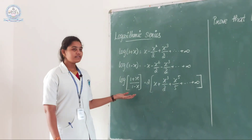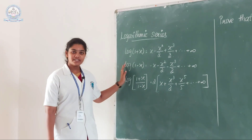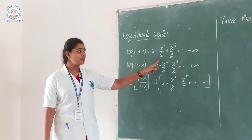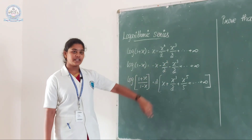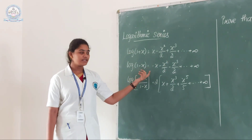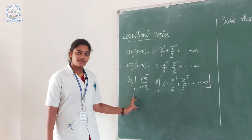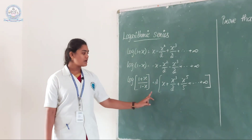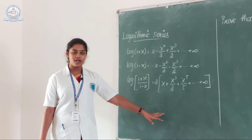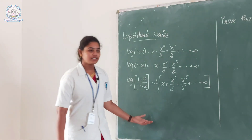Now we discuss the logarithm series. The definition is: log(1 plus x) equals x minus x squared over 2 plus x cubed over 3, up to infinity. Log(1 minus x) equals minus x minus x cubed over 3, up to infinity. And log of (1 plus x) over (1 minus x) equals 2 times (x plus x cubed over 3 plus x to the power 5 over 5), up to infinity.